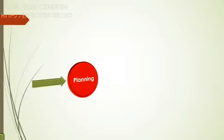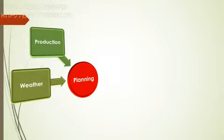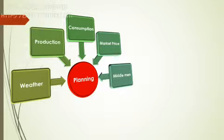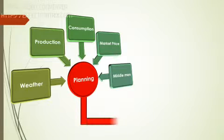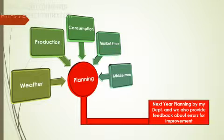For food sufficiency, we make plans. To make the plan, we collect information from the weather department, from production, regarding consumption, market prices, and the impact of middlemen. This evidence is collected from different departments like the Bureau of Statistics of Bangladesh, different non-government organizations, and my department also collects information. We then make a plan for the next year, implement it, and collect feedback on errors.